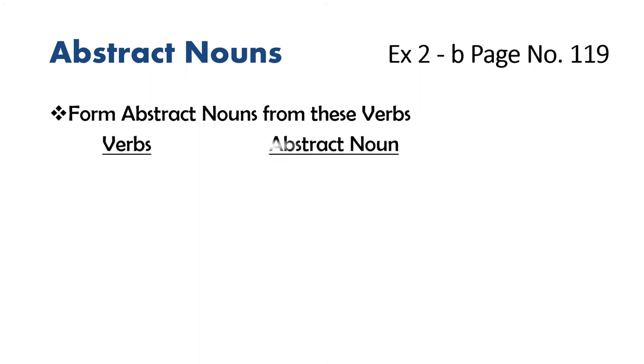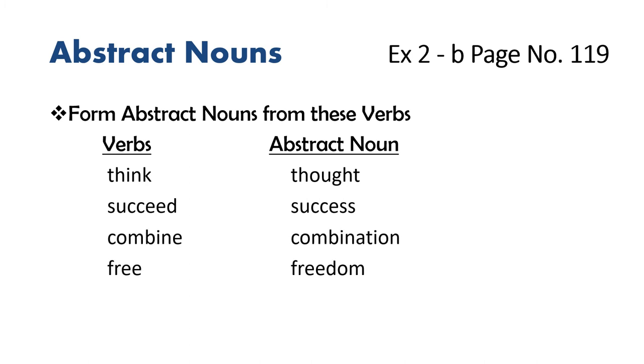Now let's see exercise 2b on page number 119 which says form abstract nouns from these verbs. The first verb is think and the abstract noun is thought. Succeed, success, combine, combination, free, freedom.